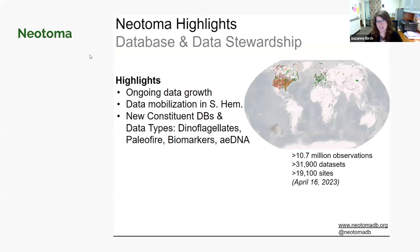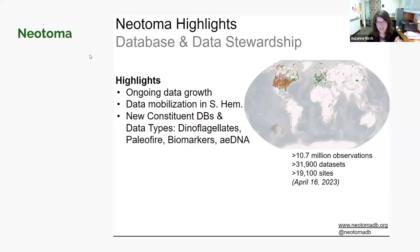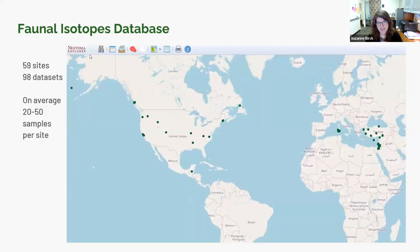Here's one of the slides I just modified last minute — Jack's updated. We have Neatoma growing by the day. The last screenshot I had was from October, and there are about 2 million more observations since then. In comparison to the overall coverage of Neatoma, the funnel isotopes database is up to 59 sites with 98 datasets.